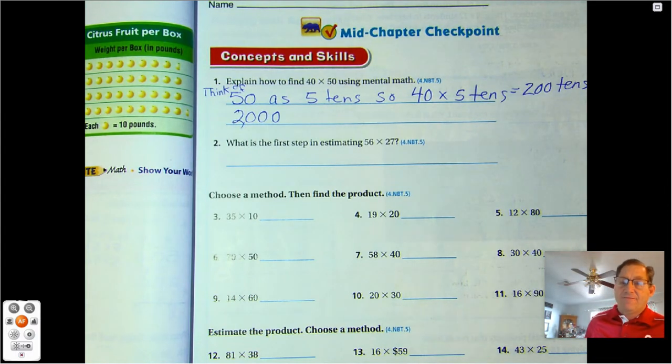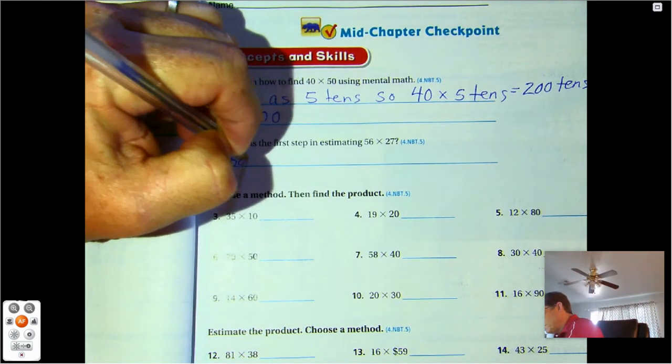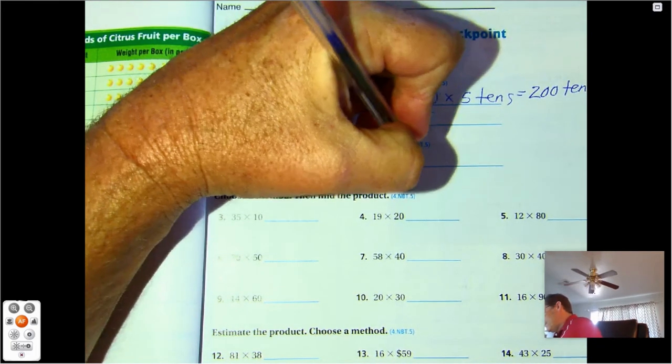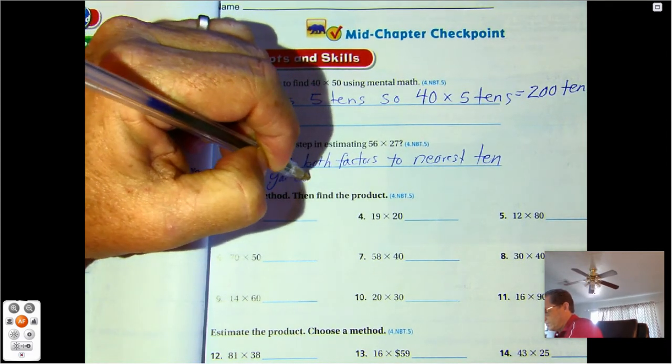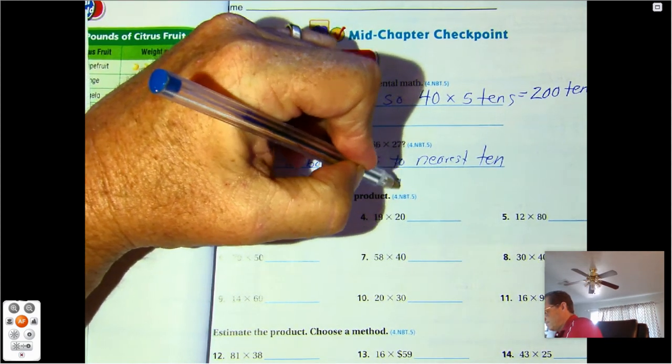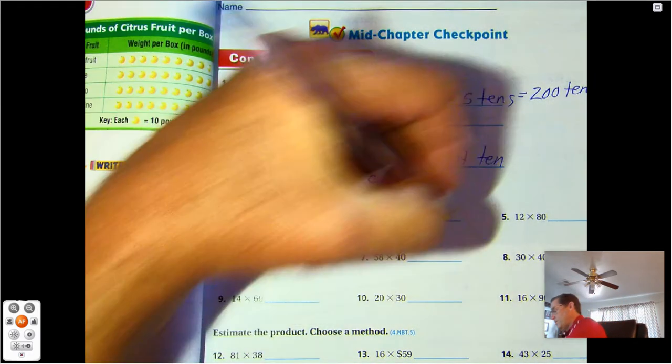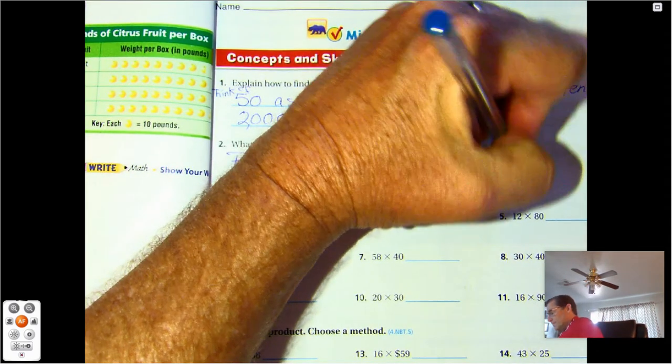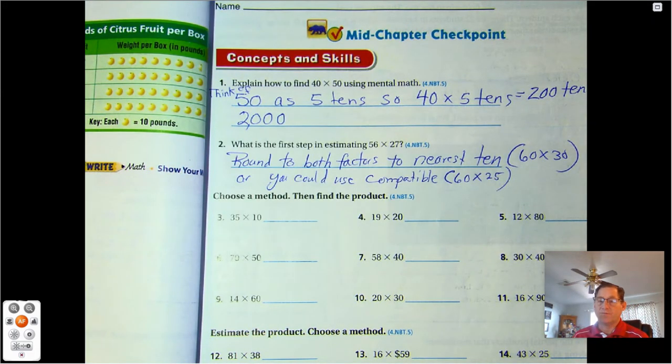And what is the first step in estimating 56 times 27? Well we're either going to round both factors to nearest ten or you could use compatible numbers with rounding. So I could make it 60 times 25. And if I was rounding it would be 60 times 30. So either method would work.